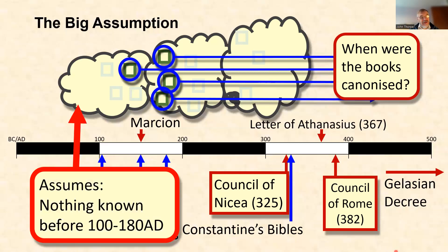Another assumption in this approach is that we know nothing at all before the Apostolic Fathers, and the dating of New Testament documents gets fudged so that everything is pushed into the second century. More conservative scholars assume nothing is known before 100 AD; more radical ones push it to around 180 AD when Irenaeus is writing. That's not a very helpful picture, but it's what comes from that particular assumption.